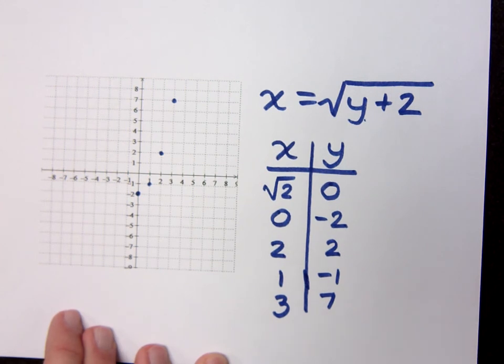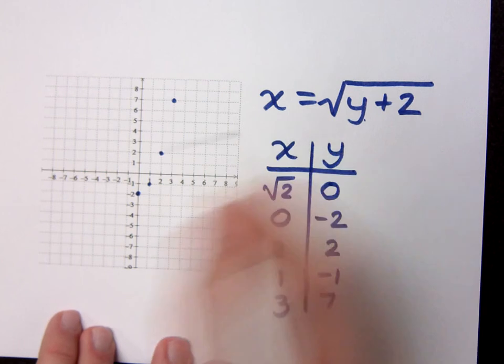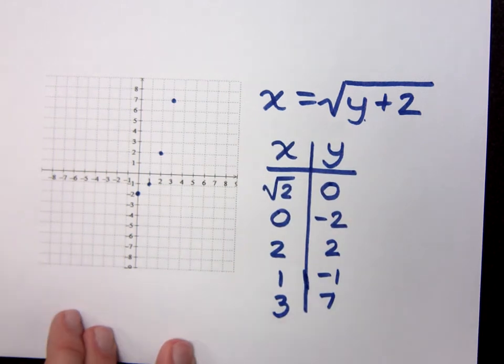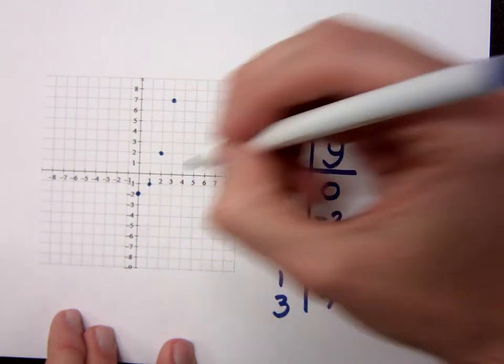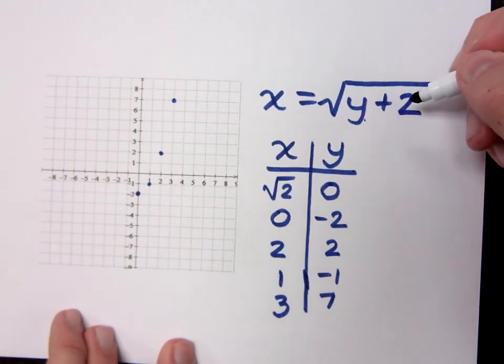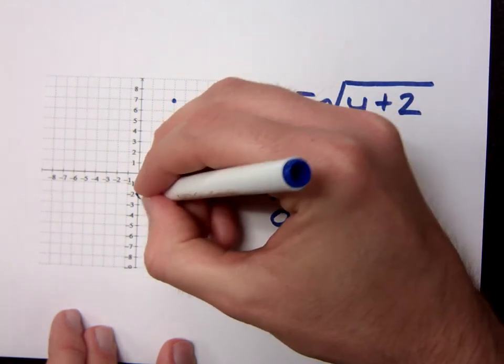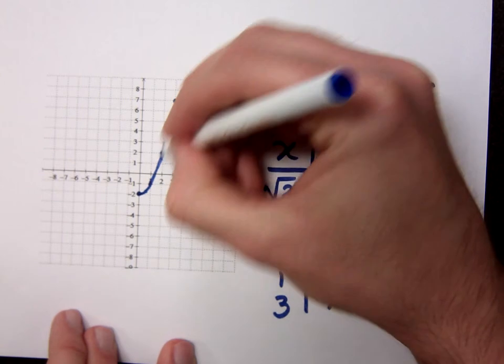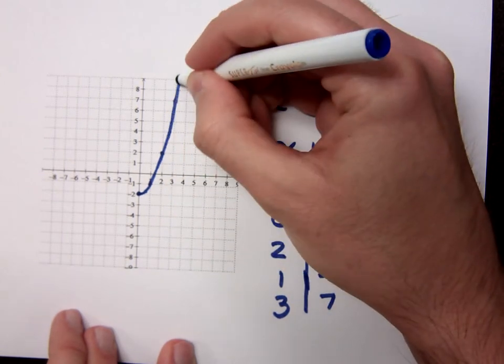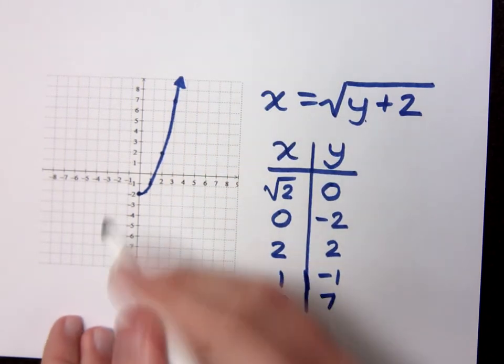Remember when we graphed square root functions, didn't we say they look like half of a parabola laying on its side? Since this is x by itself, the orientation is different. And so it does look like half a parabola, except it just straight up looks like half a parabola. If you had squared both sides like you were trying to do before, you would have gotten something that would have been a parabola. But that's not what we have here. All we have is this. It stops right here.